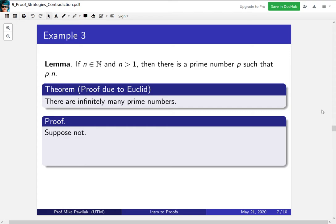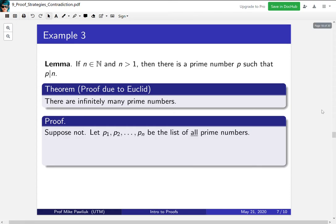So we're going to start with "suppose not." This is another way of indicating to our reader that it's a proof by contradiction. So suppose that it's not true that there are infinitely many prime numbers. What does that mean? Well, it means that there are finitely many prime numbers. So we start by listing them out. Let p₁, p₂, all the way up to pₙ be the list of all the prime numbers.